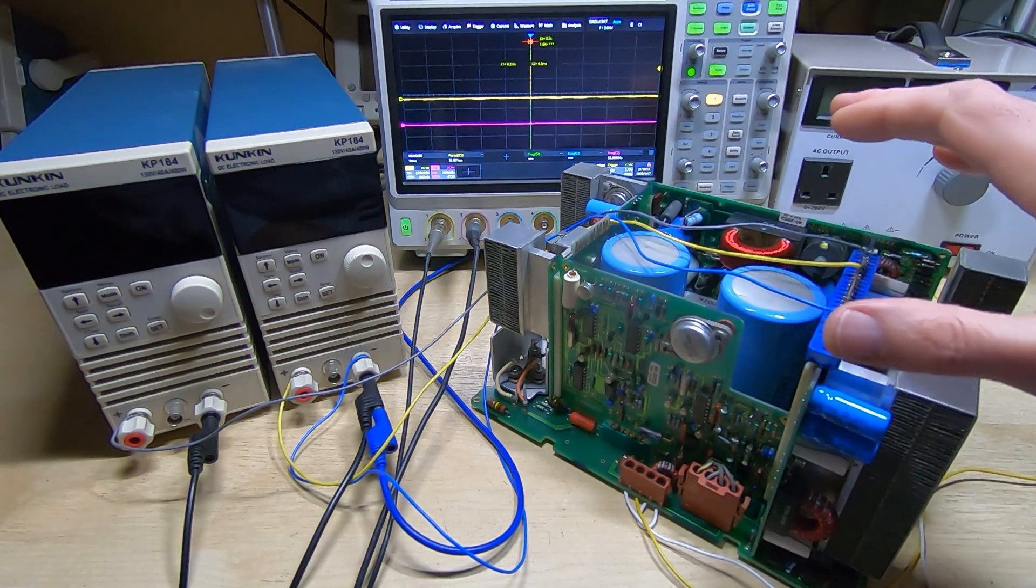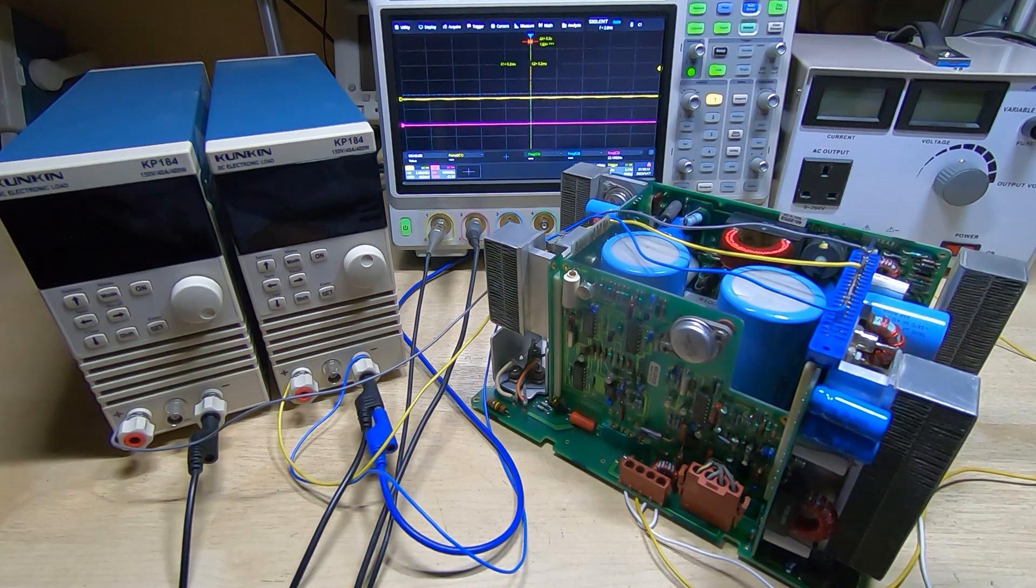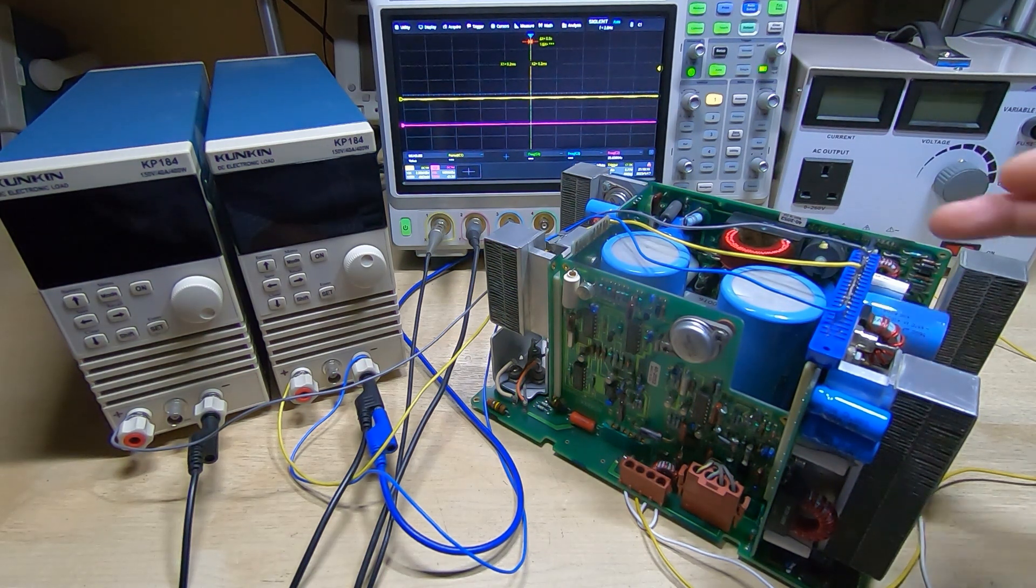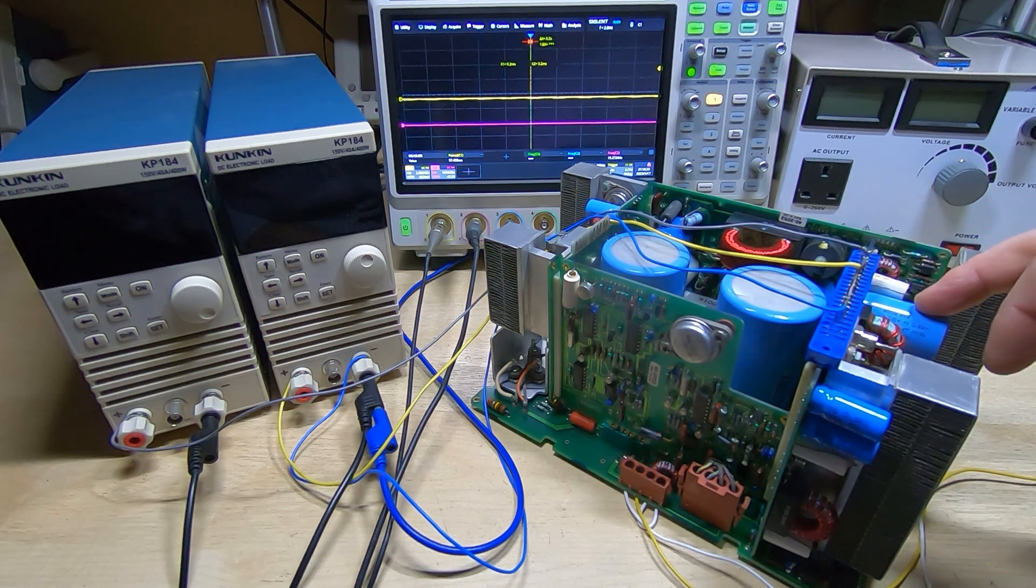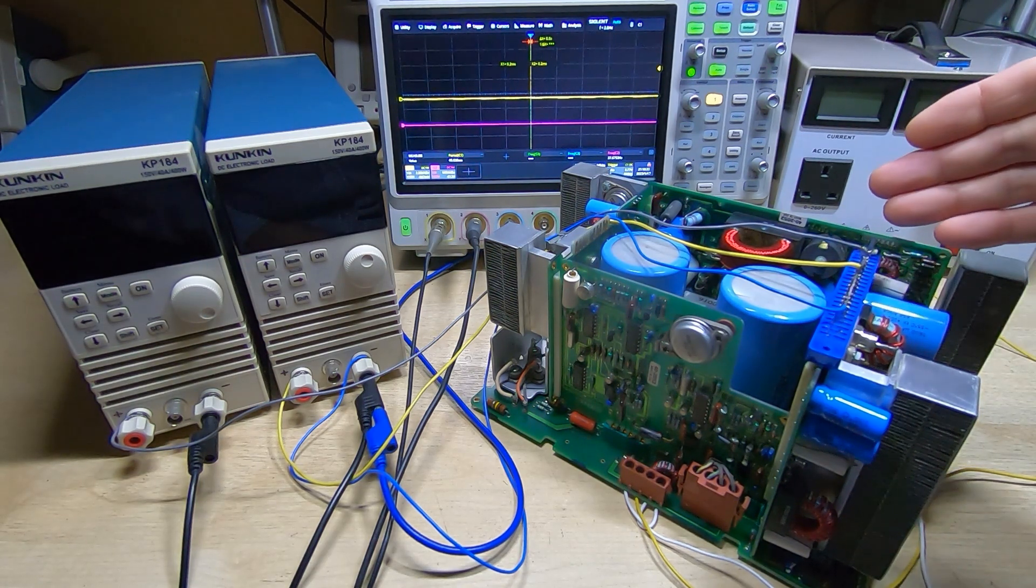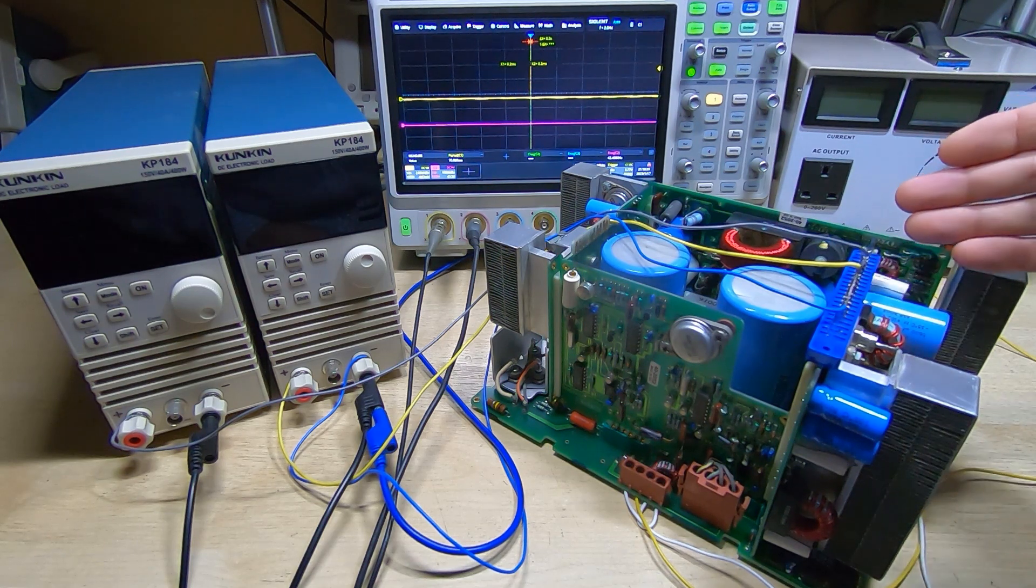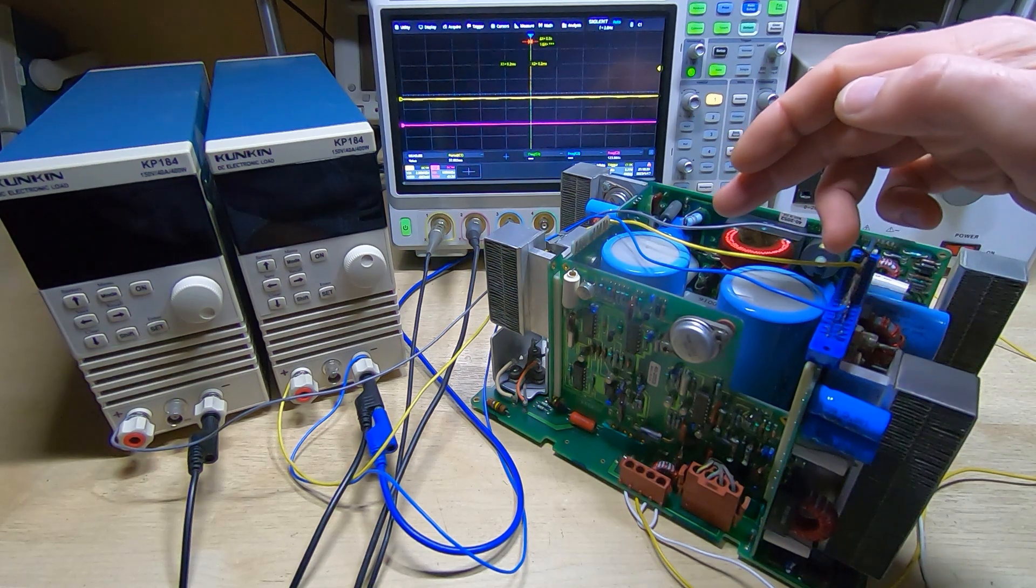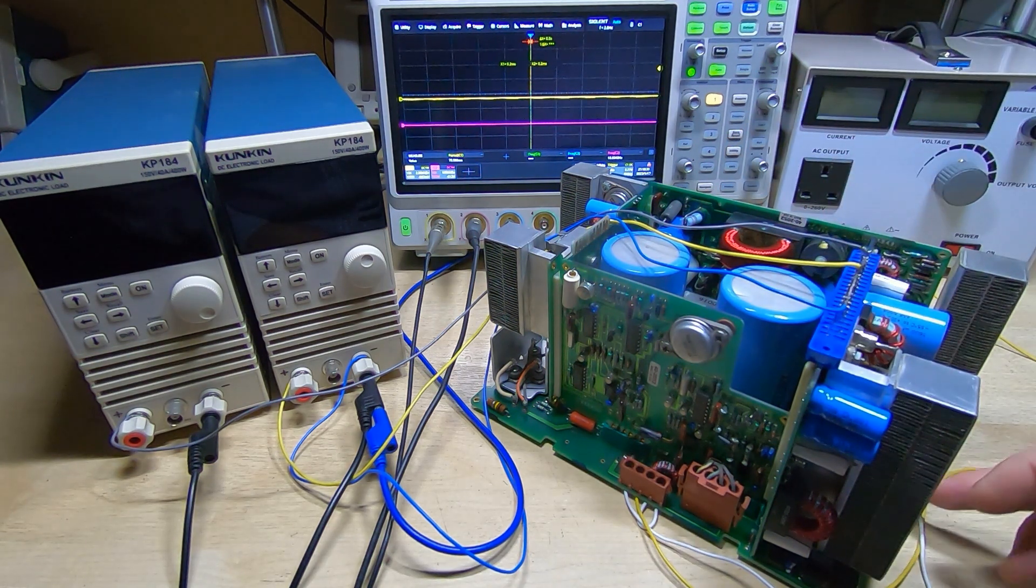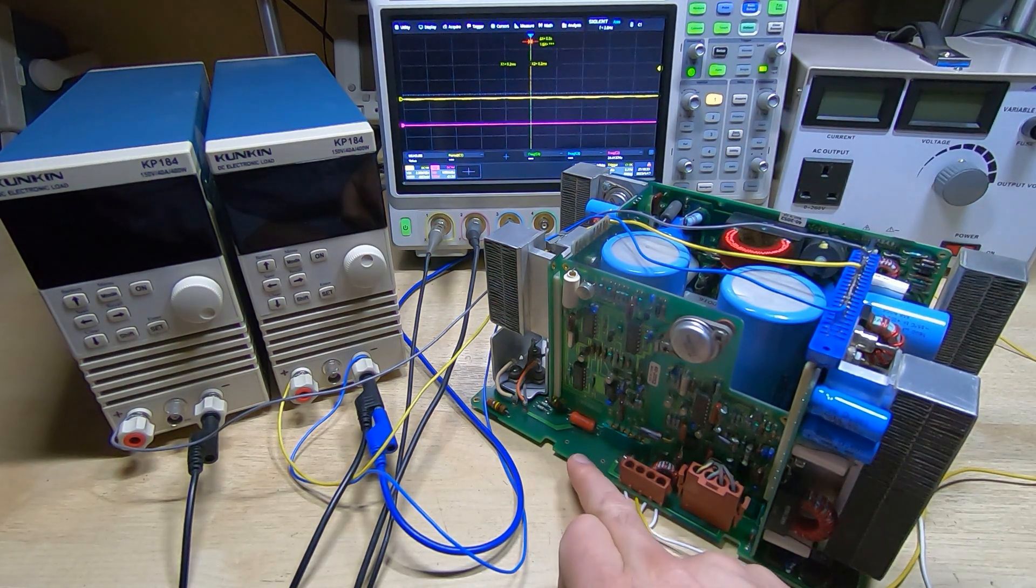For the most part it all seemed to work, but in the previous video I expressed concern about the plus 18 volt rail. It's a pulse width modulation type power supply and has a high voltage DC supply that is produced on the main motherboard, that's the board at the bottom.